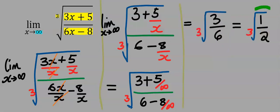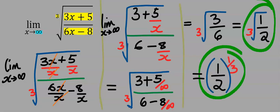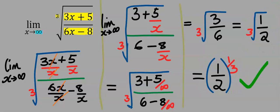Recall that any number divided by infinity is zero. Hence you now have the cube root of one over two. We can rearrange this.